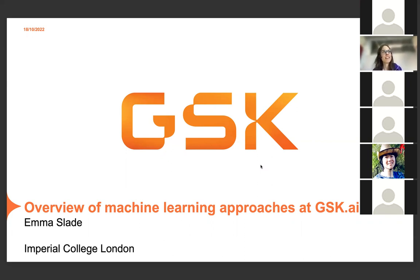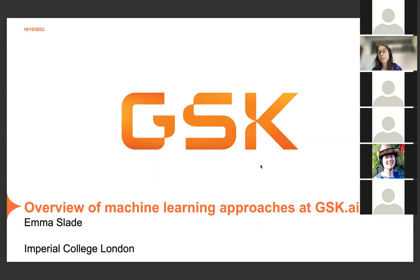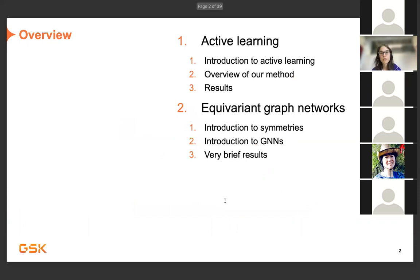I was asked to give a talk about the different machine learning applications we have at GSK AI. GSK is obviously a pharmaceutical company, and although we focus on biological data, biological data can take many different forms. The very broad types of data and questions we're trying to answer from a biological level means that the uses of machine learning are extremely varied.